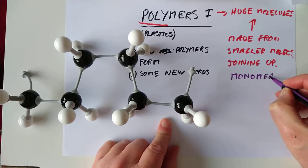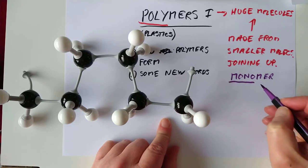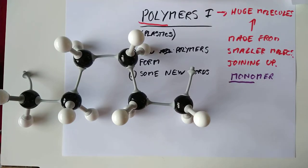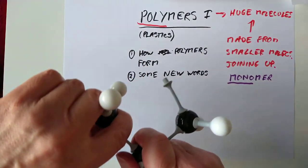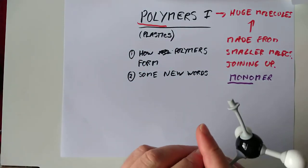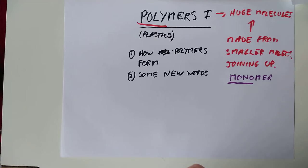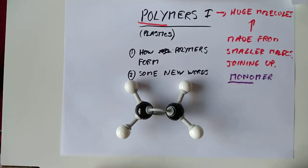That is true. But because we're joining them up to make a big long chain, these are now called monomers. Mono meaning one. So the monomer, it was the little molecule that we started with. In our case, let's just reform it. That was our monomer. So today's monomer was ethene.